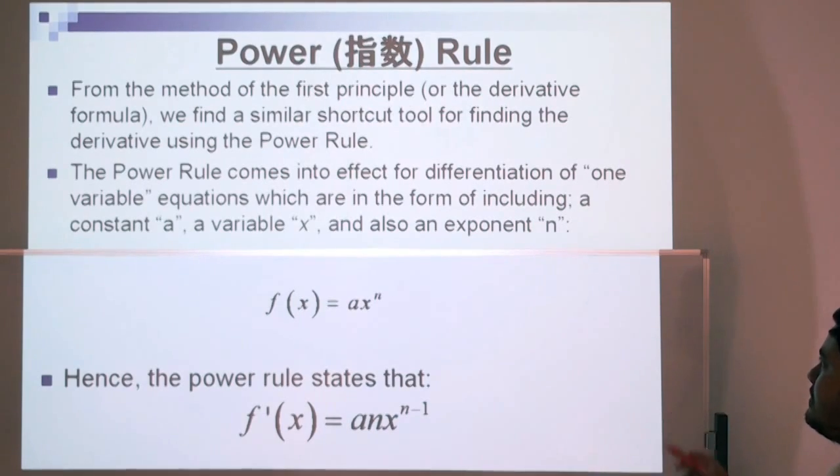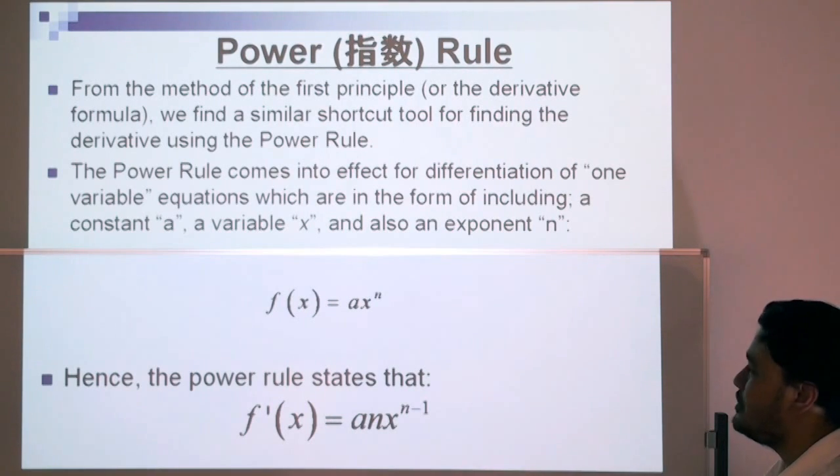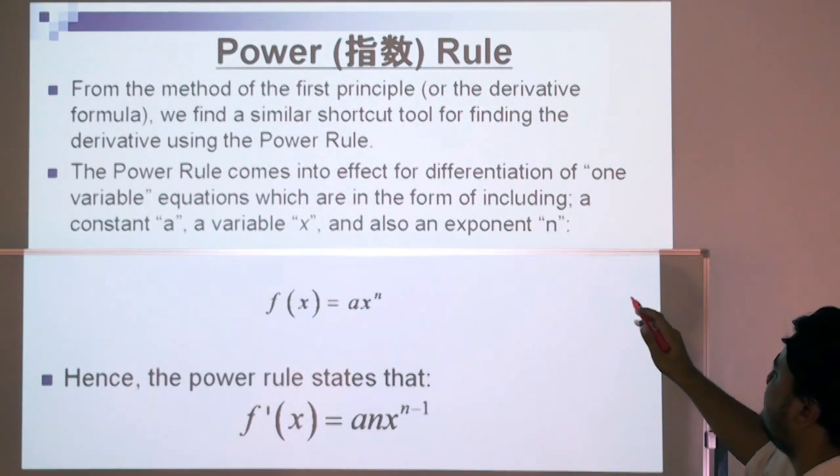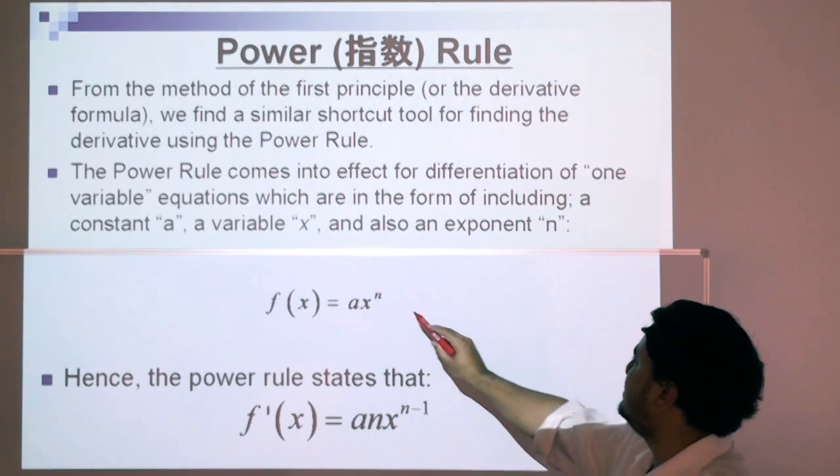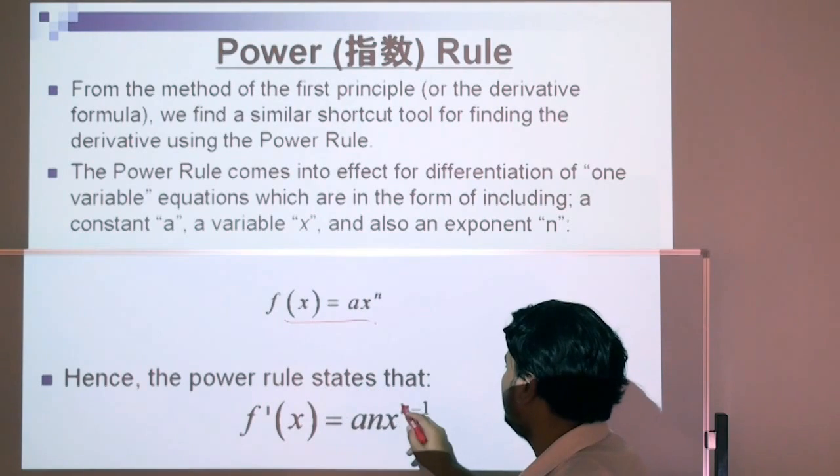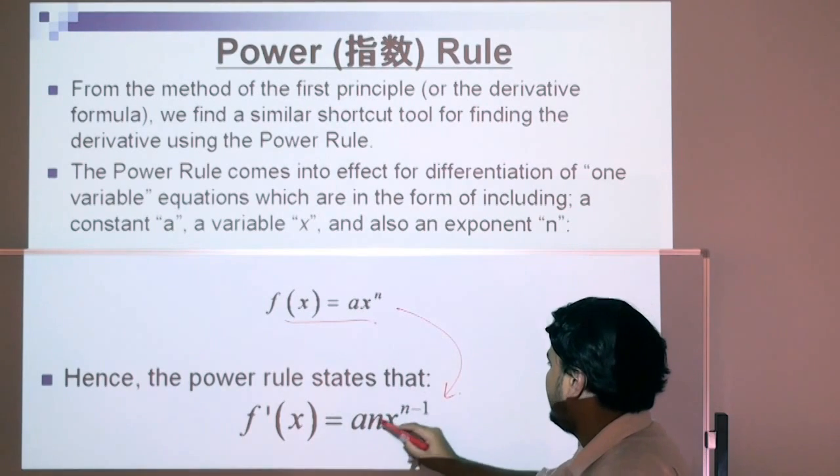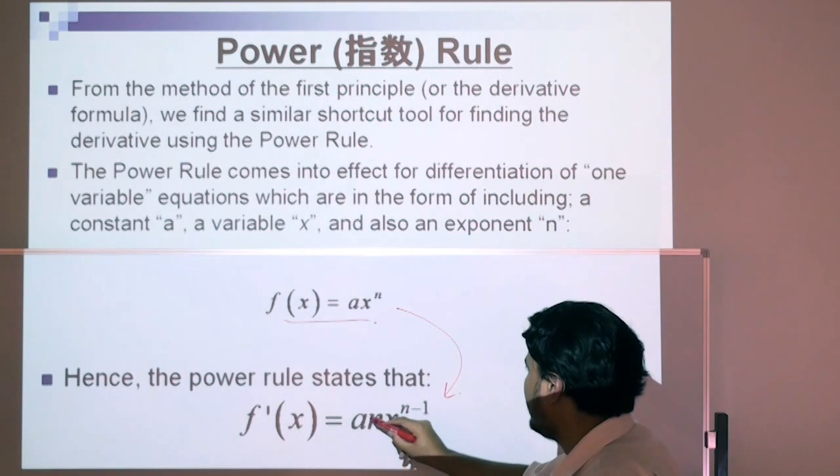The power rule. From the method of the first principle, the derivative formula, we find a similar shortcut tool for finding the derivative using the power rule. The power rule comes into effect for differentiation for one-variable equations, which are in the form of including a constant a, a variable x, and an exponent n. Hence, the power rule states that f prime of x is equal to anx to the power of n minus 1.